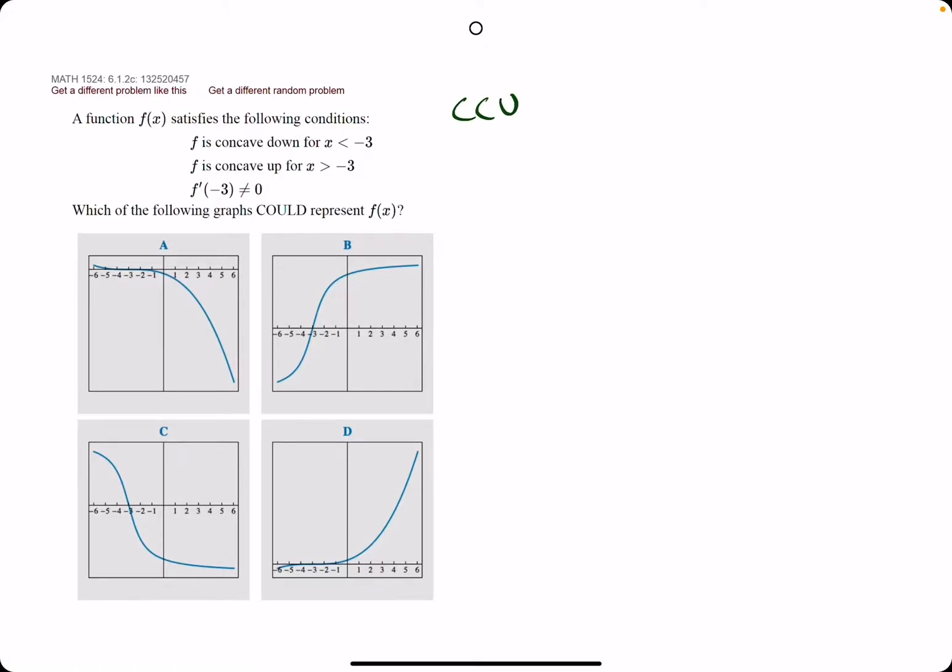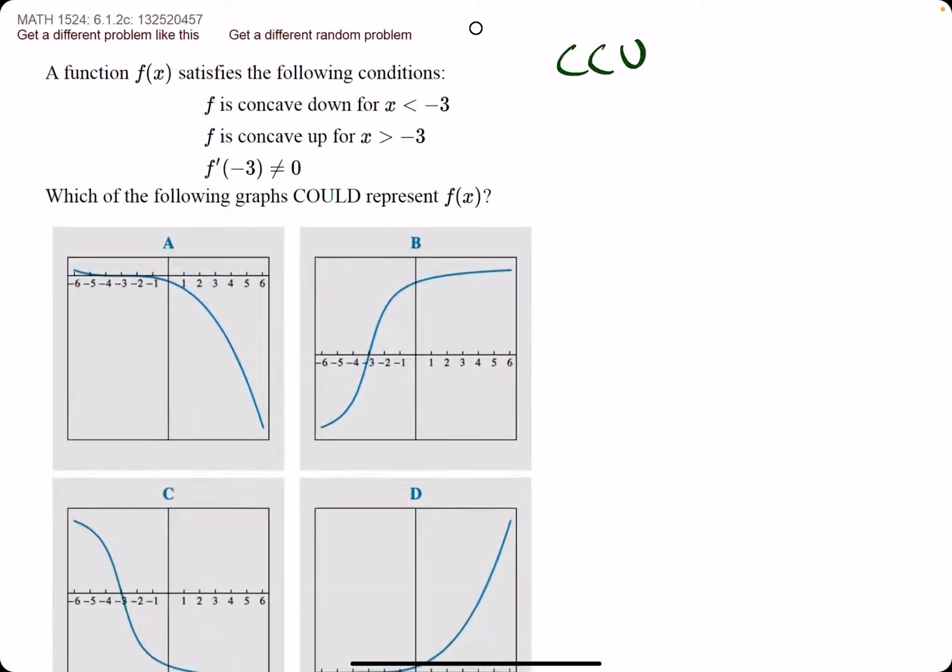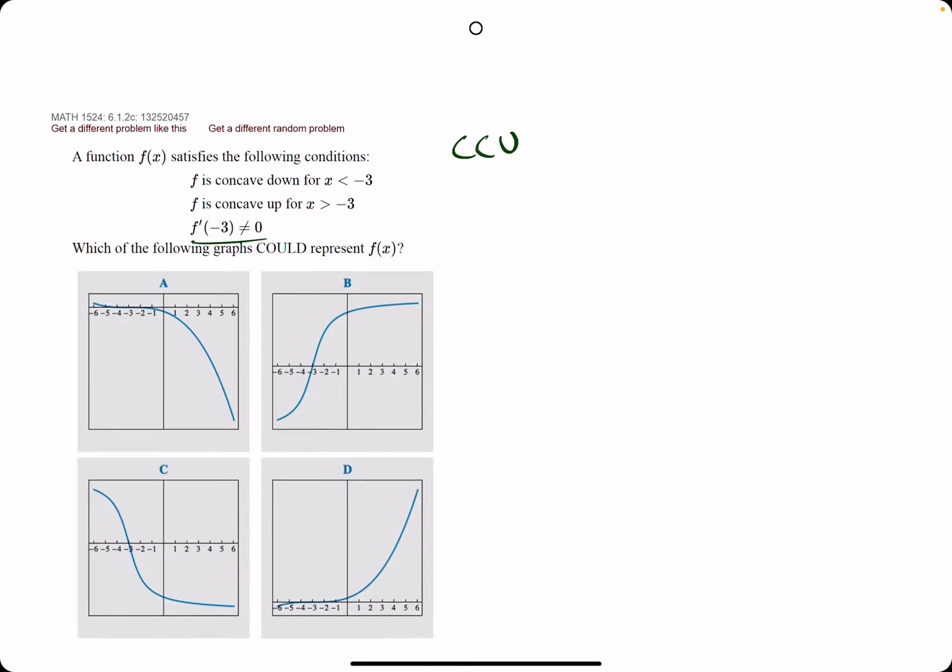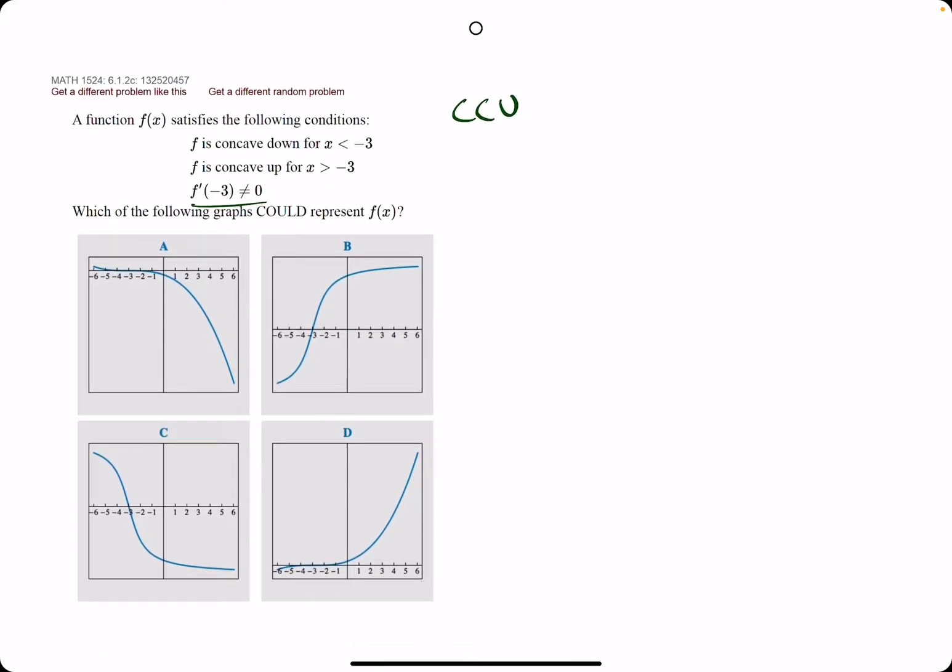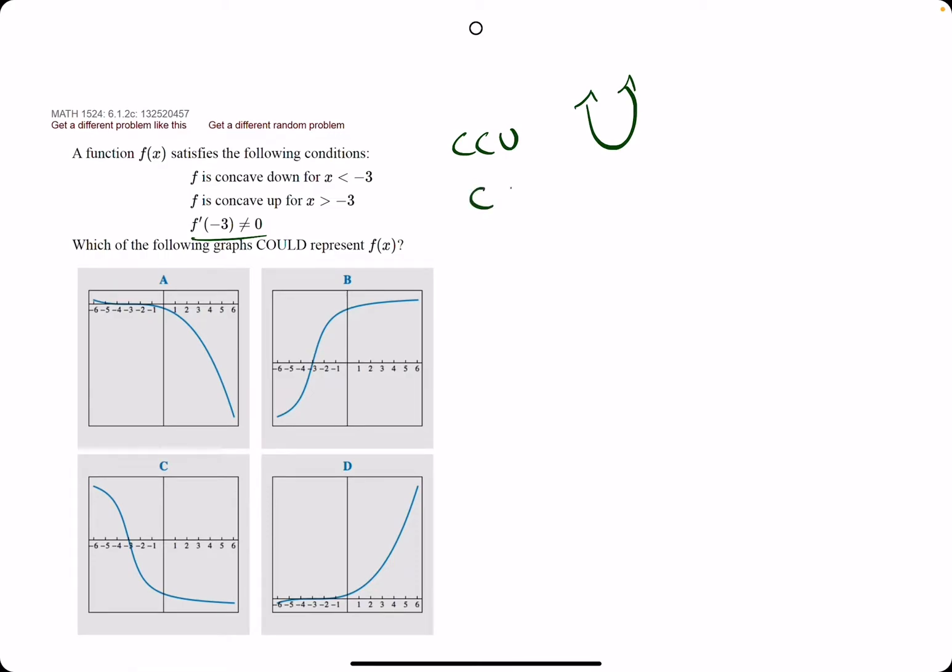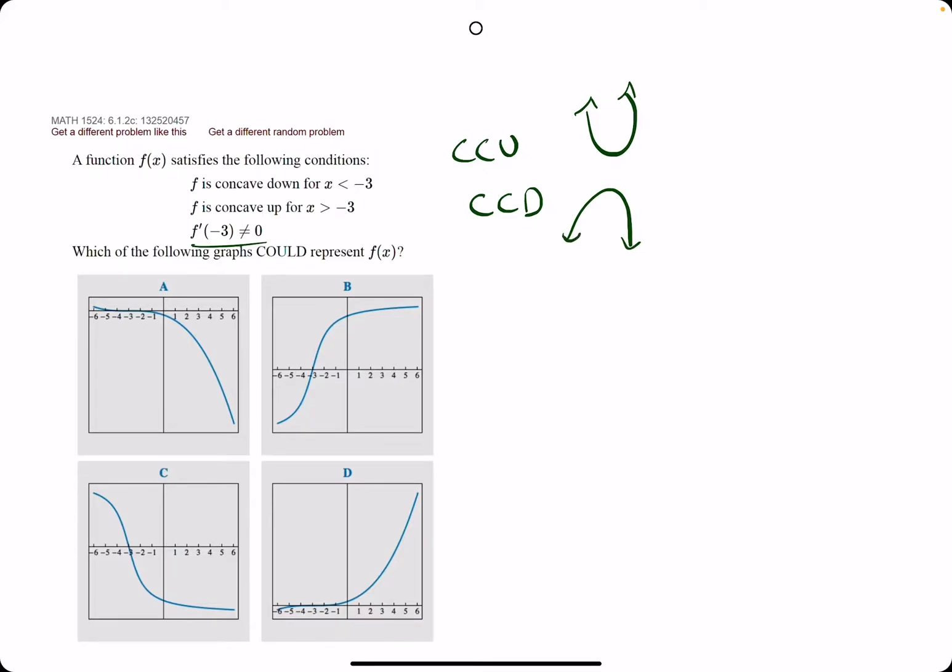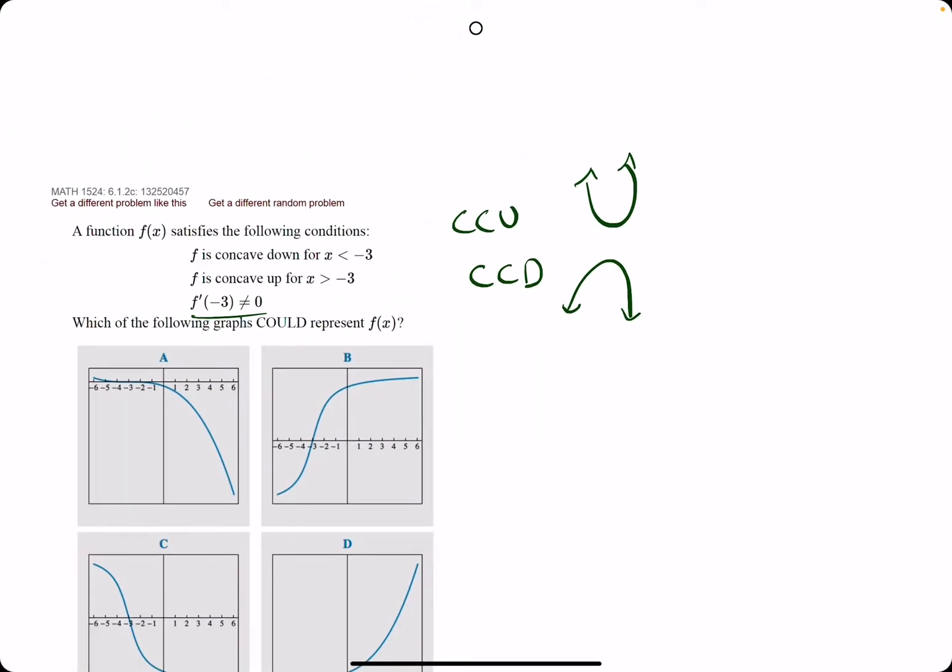Okay, in this problem they're asking us something about concave down, concave up, and then they mentioned some f prime value not equaling zero. So let's break it down. Concave up is where the graph has this open U-shaped curve appearance. Concave down is where it's opening downward.